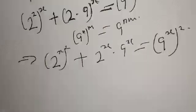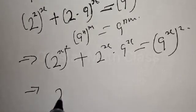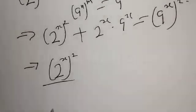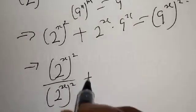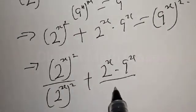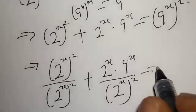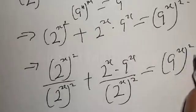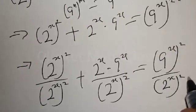Now let's divide both sides by 2 raised to power 2x. This gives us: 2 raised to power 2x over 2 raised to power 2x, plus 2 raised to power x times 9 raised to power x over 2 raised to power 2x, is equal to 9 raised to power 2x over 2 raised to power 2x.